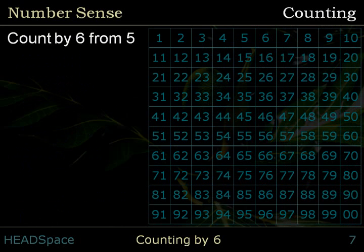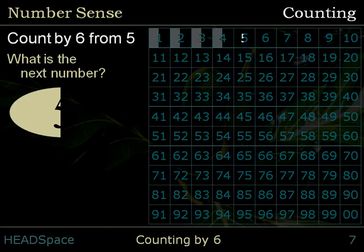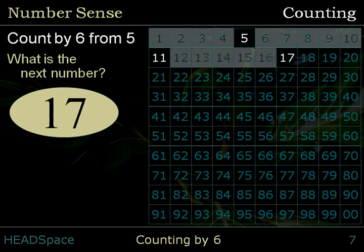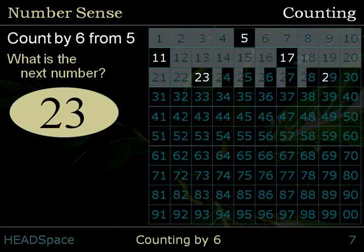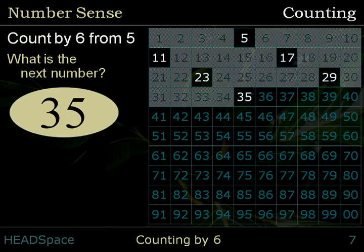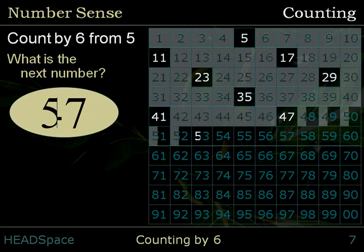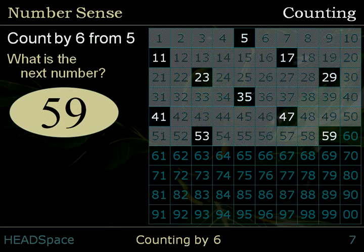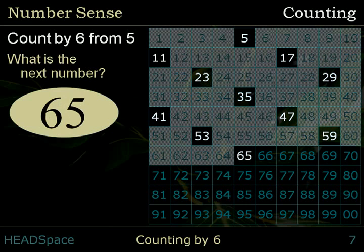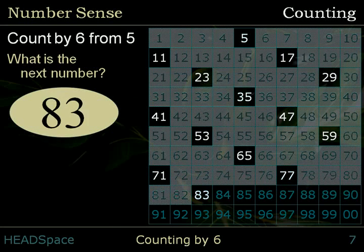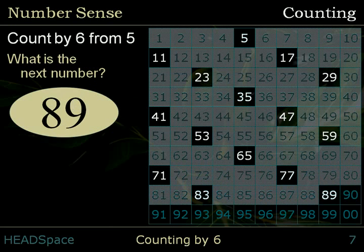Count by 6 from 5. What is the next number? 5, 11, 17, 23, 29, 35, 41, 47, 53, 59, 65, 71, 77, 83, 89, 95.